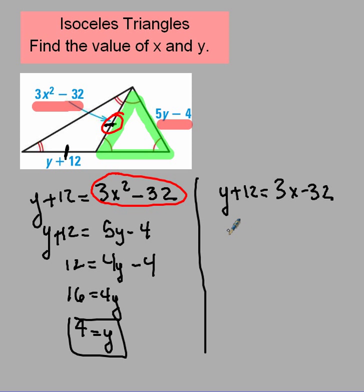Well, I know how much y is now, so I can just say, well, 4 plus 12 equals 3x squared. Oops, I forgot my x squared up there. 3x squared minus 32.